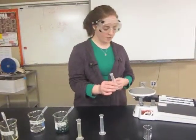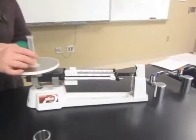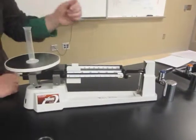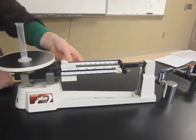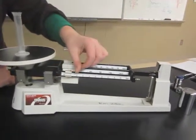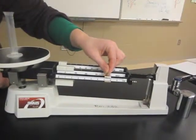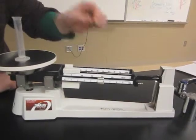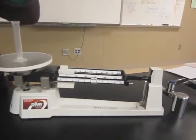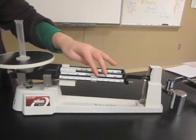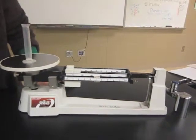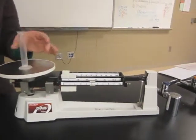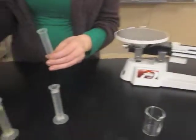Then you need to repeat the process one more time for your water. Note that the water is only green because it has been dyed. Find your empty mass of your third graduated cylinder — it should be approximately the same as the others, about 5.2 grams — and then fill it with 10 milliliters of water.